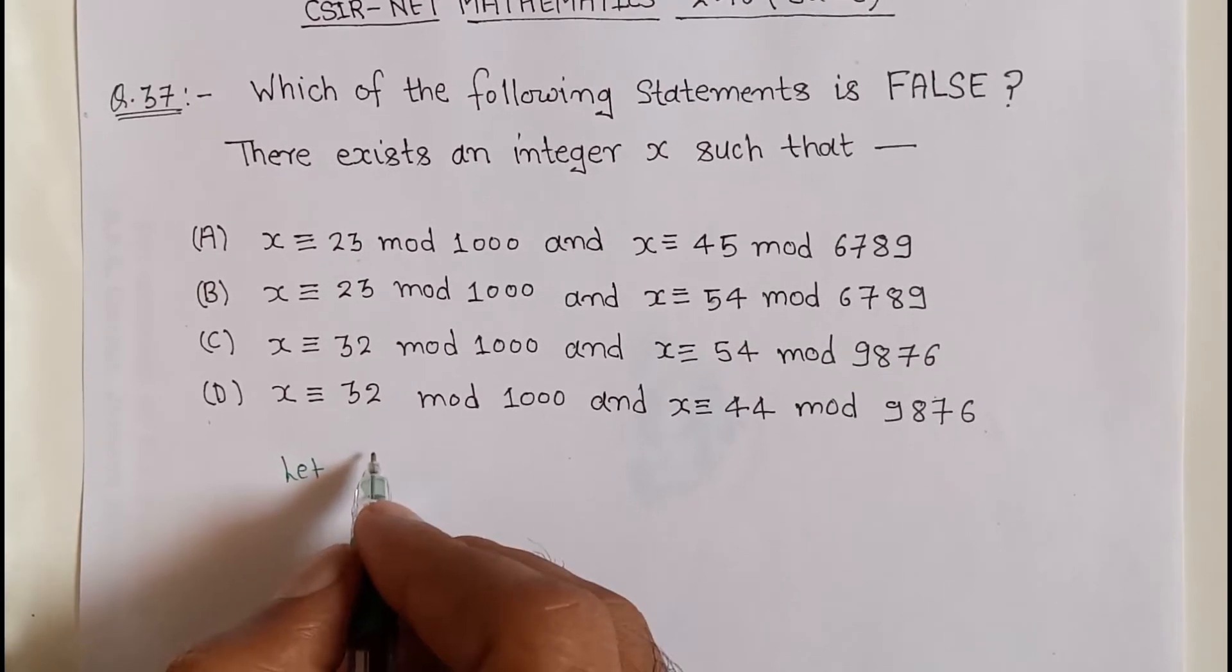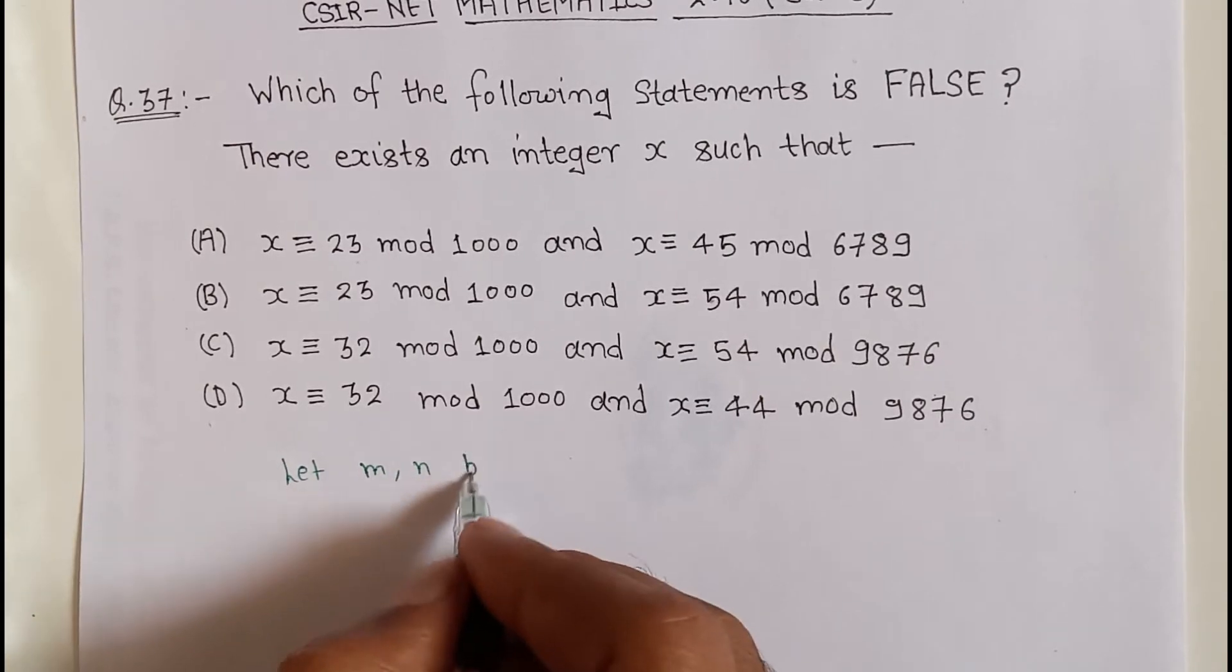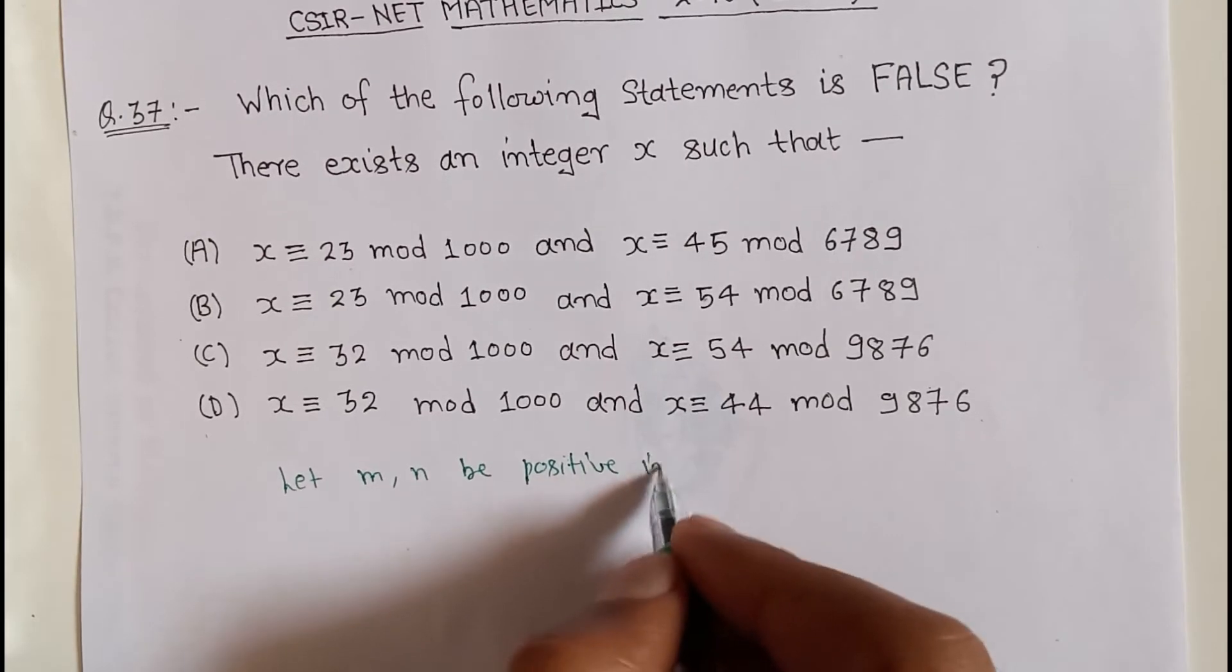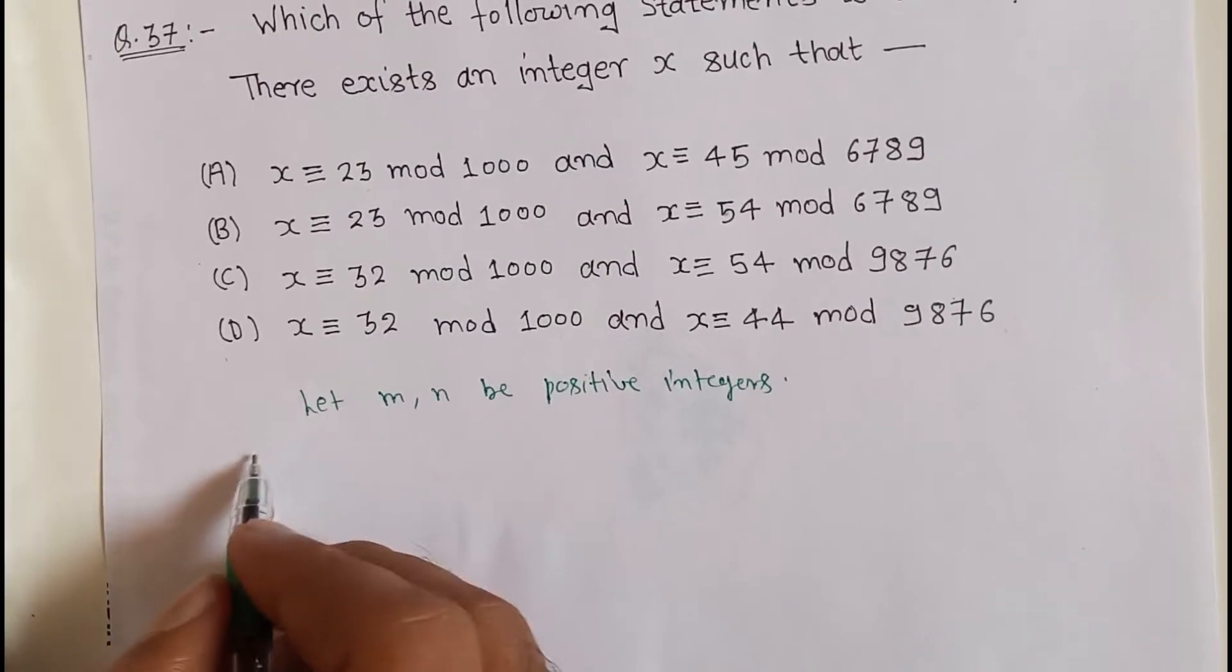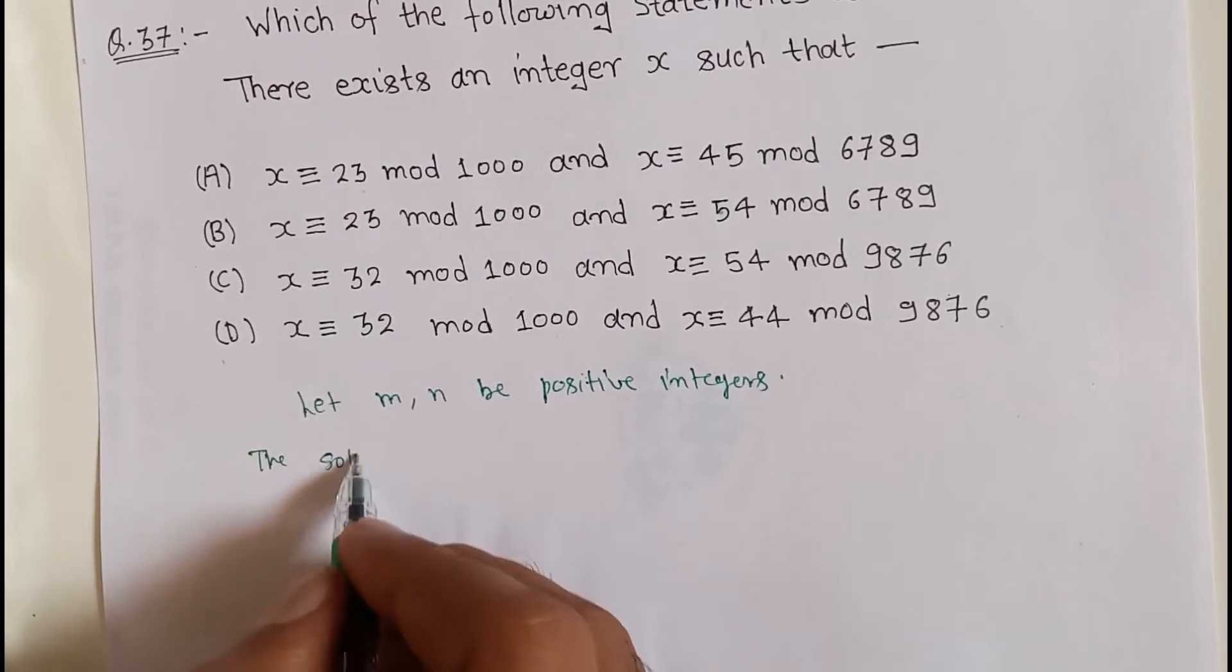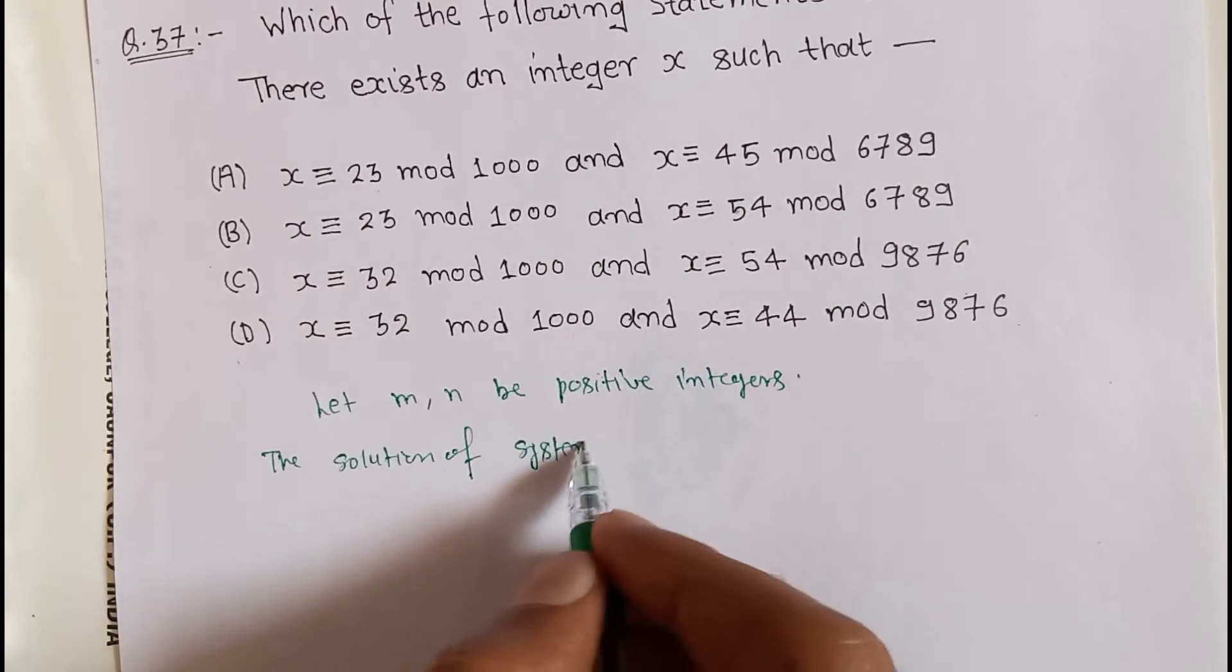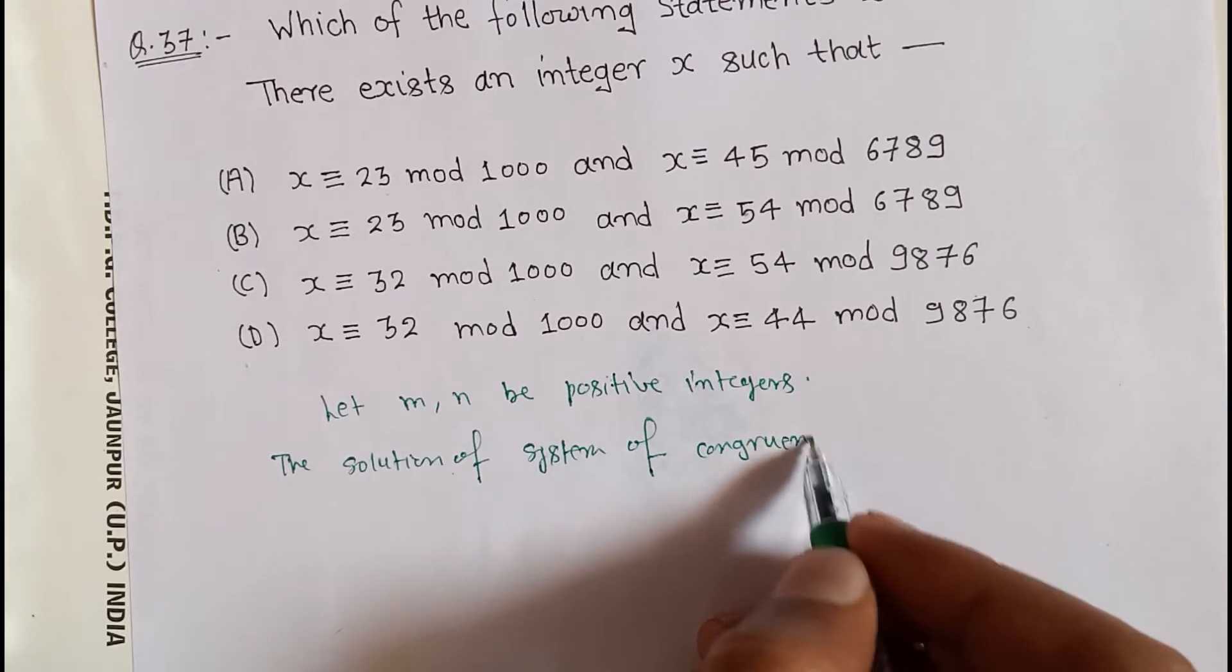Let m and n be positive integers. The solution of a system of congruences: